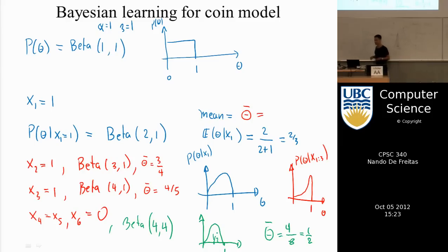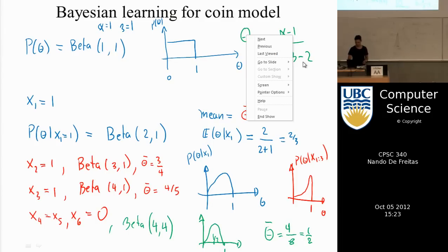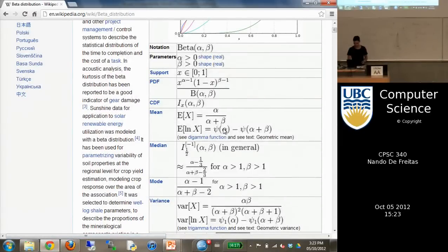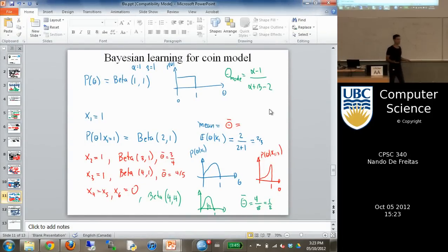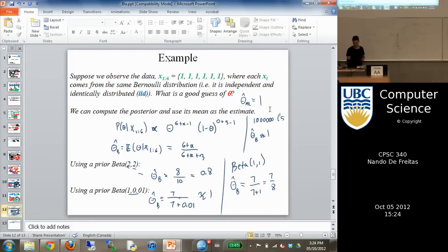That's Bayesian learning. Some people also report the mode, which is the location of the peak: theta-mode equals alpha minus 1 over alpha plus beta minus 2. These are different estimates. You also have an expression for the variance, which tells you how certain you are in that value of theta. Ultimately, the answer is a full distribution, and you give summaries of that distribution to the end user.